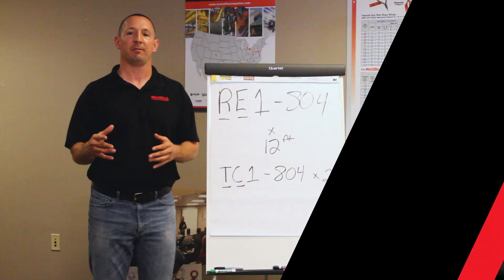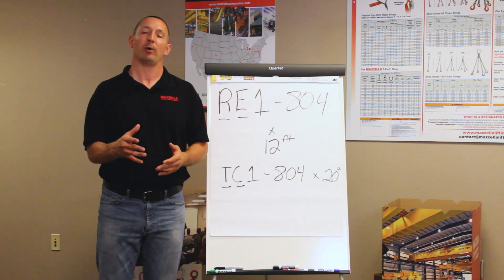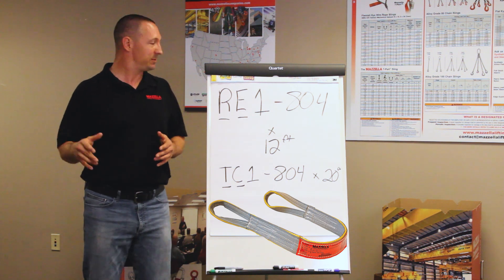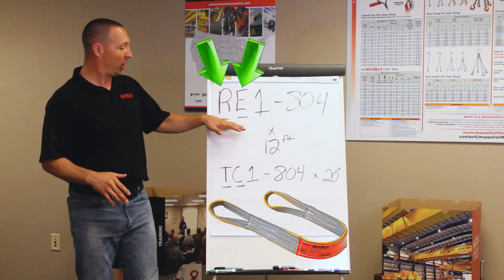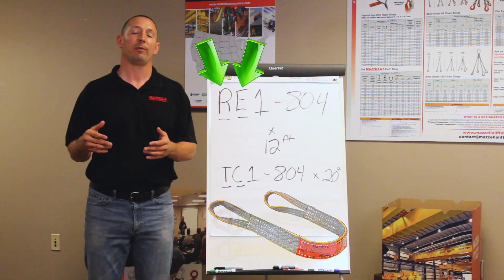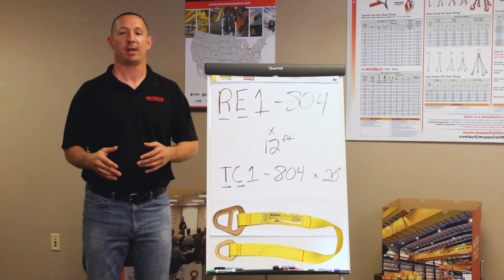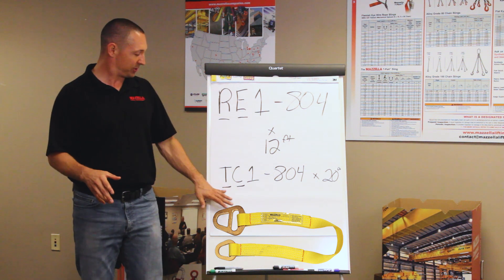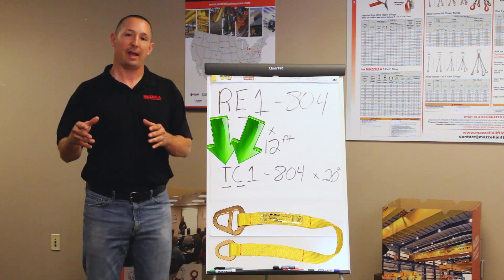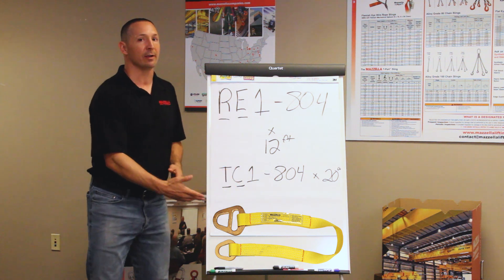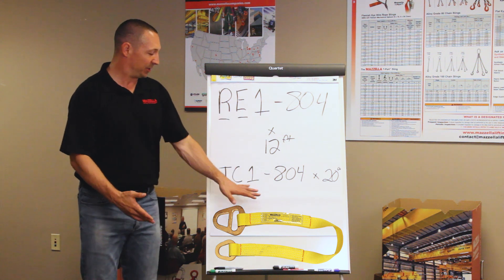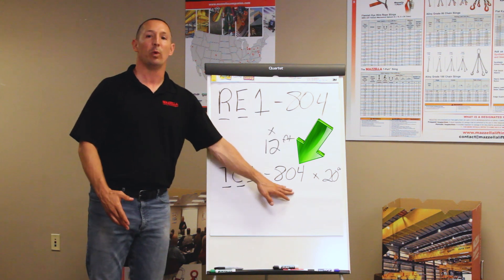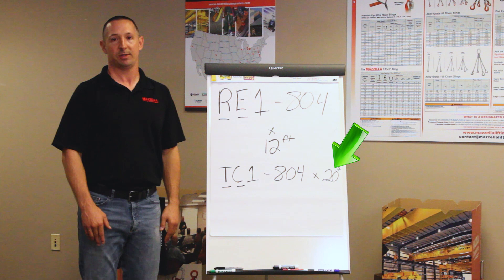Some other flat web sling verbiage that you might run into that I want to cover right now would be a reverse eye, which denotes a certain type of eye on the end of a flat web sling. That would actually start with an RE or we've got what we call a triangle choke for flat web slings. It has certain triangle fittings on each end of the sling and that would start with a TC. But as we move along our verbiage right here, it's all going to be the same. It's going to denote the number of plies along with the edge guard or non-edge guard, and then the width of the sling with the length bearing point to bearing point.